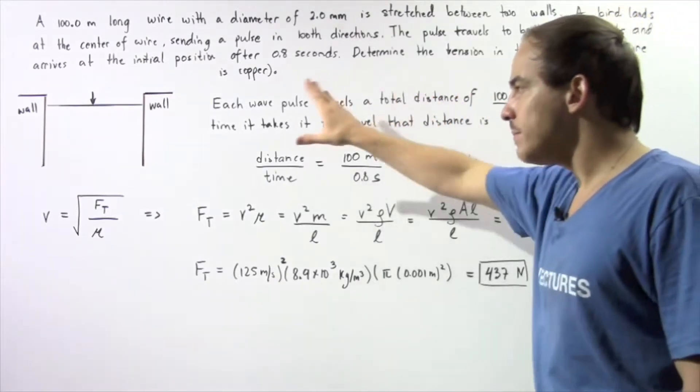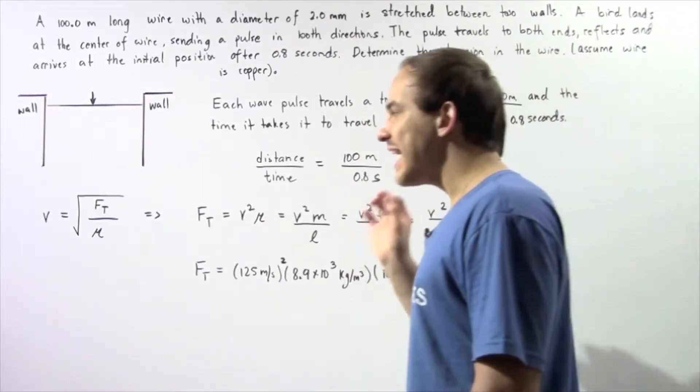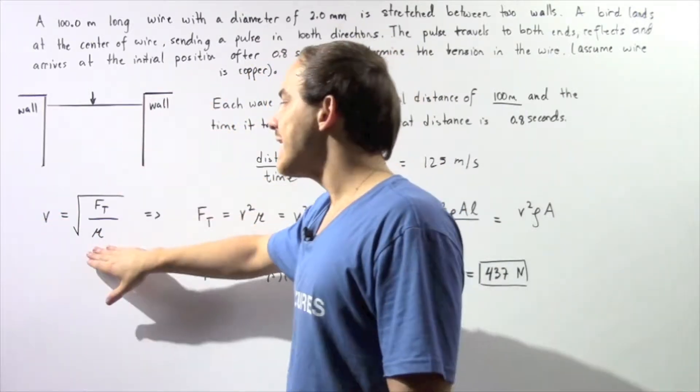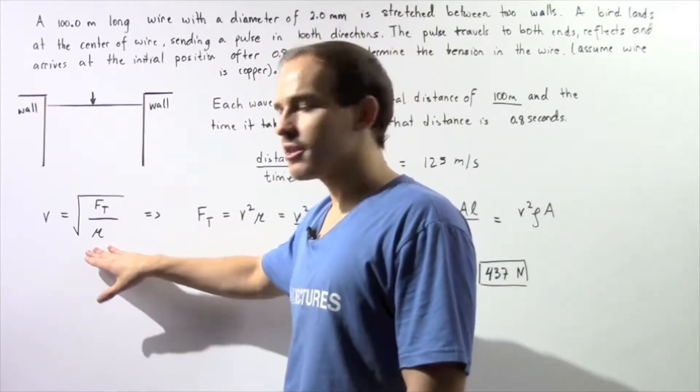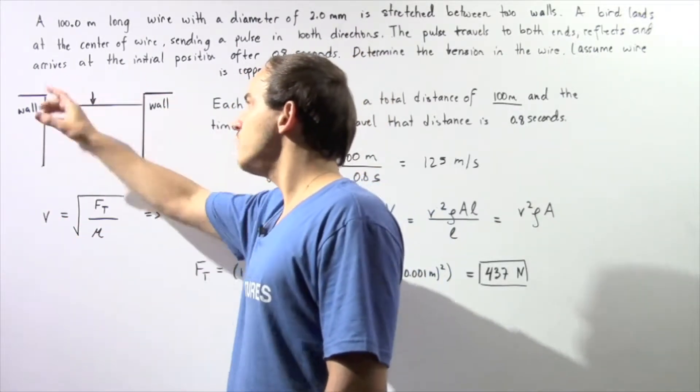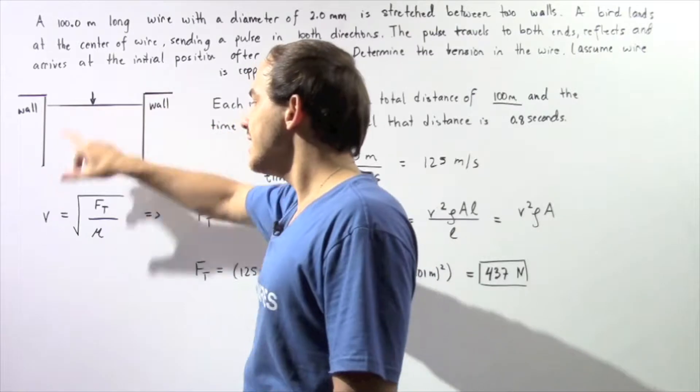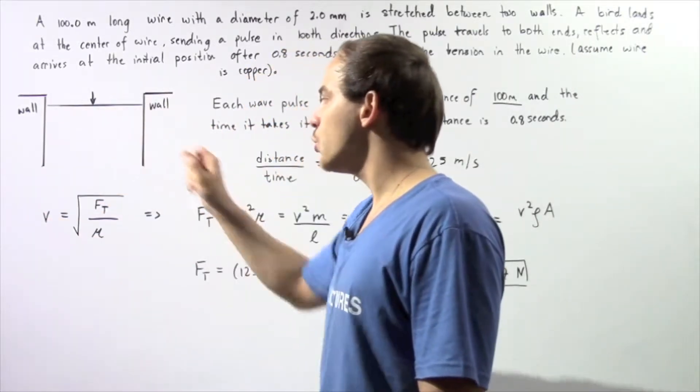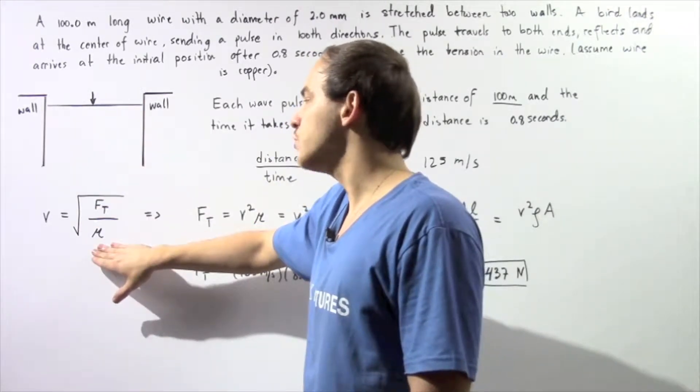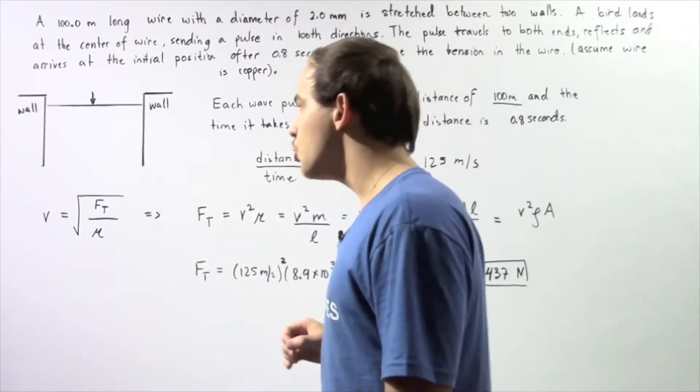Now before we begin, let's recall the relationship between the velocity, our tension, and our mass per unit length. So the velocity of our pulse moving inside our wire is equal to the square root of the tension in our wire divided by the mass per unit length given by μ.